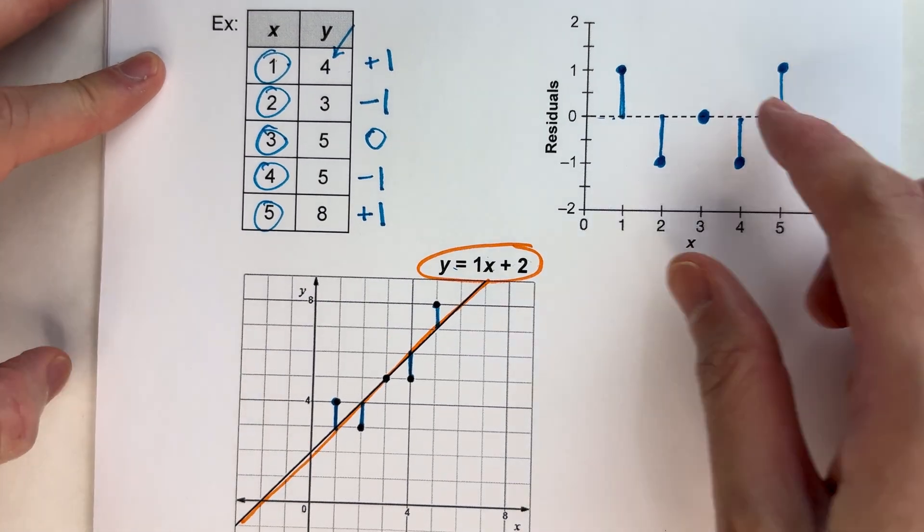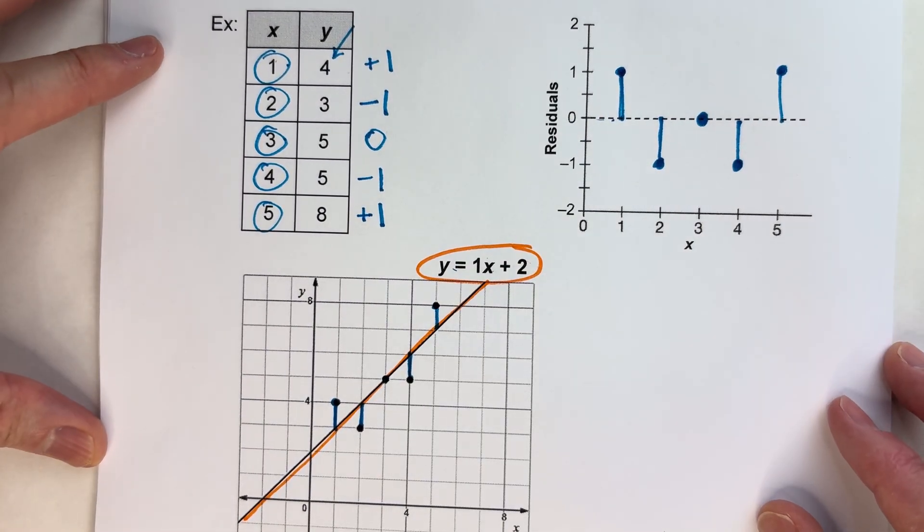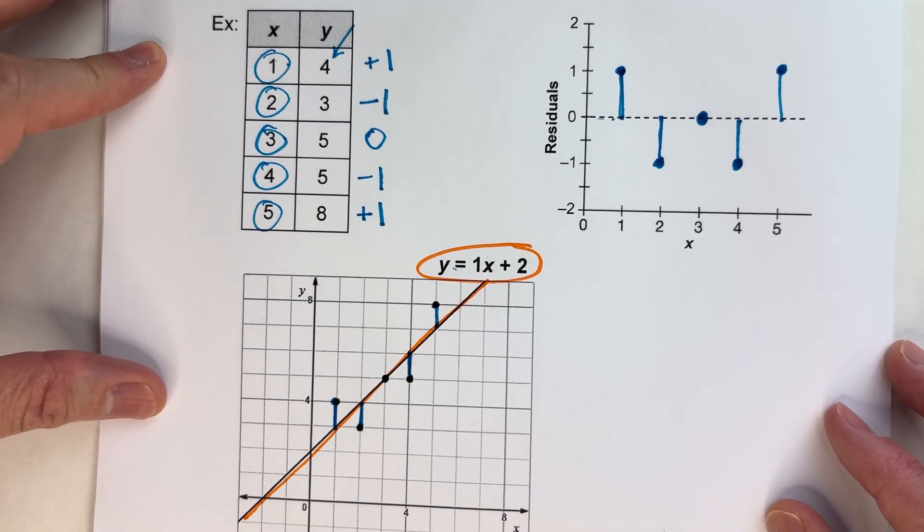So that's what residuals are. And they basically tell us how close was our data to what we predicted it to be.